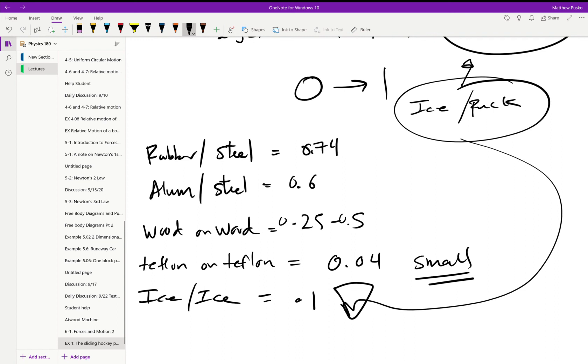So that makes sense. Hockey pucks made out of hard rubber, and if you've ever tried driving on ice, you know it's horrible and the coefficient of friction is pretty small. Alright, there you go.